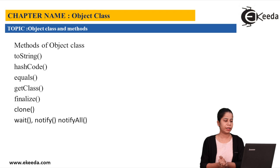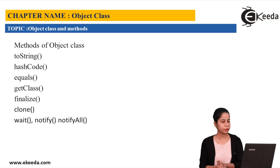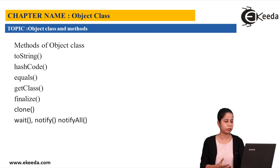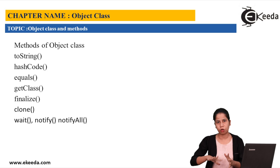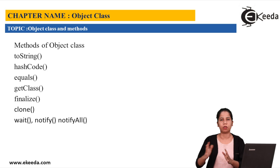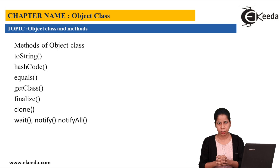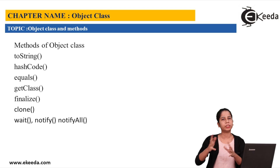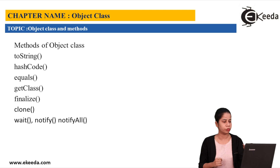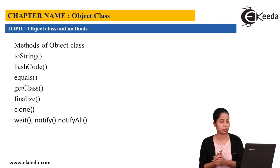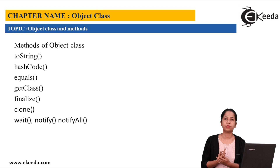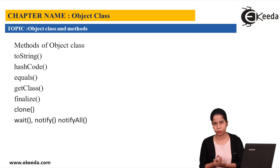Then we have another method, that is clone(). The name itself says it is a copy of the object. Whenever you want to create an exact copy of the object, you can make use of clone(). This is another way to create an object.